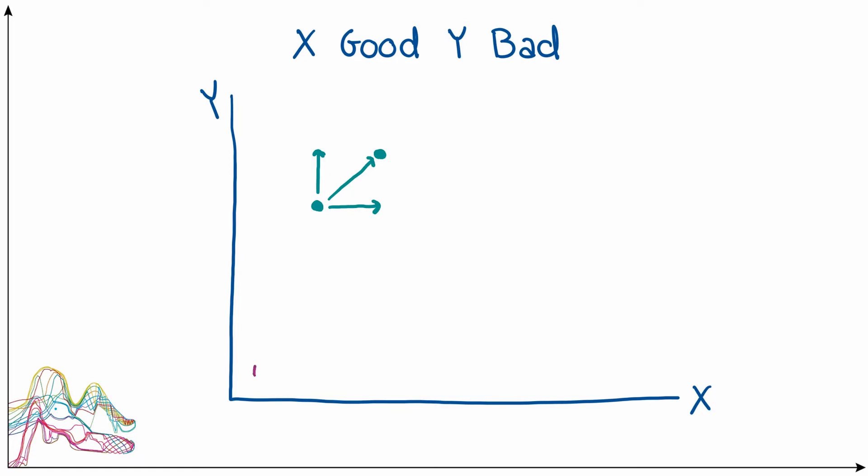The indifference curve shape results from what we call diminishing marginal utility — how X becomes less incrementally useful as we get more of good X. We've also assumed what we call increasing marginal disutility of good Y. If you think about Y as pollution, a small incremental unit of pollution isn't so bad when you only have a little, but if you're already at a high level of pollution, an incremental unit is much worse than it would be with otherwise clean air. That's the general idea of increasing marginal disutility.